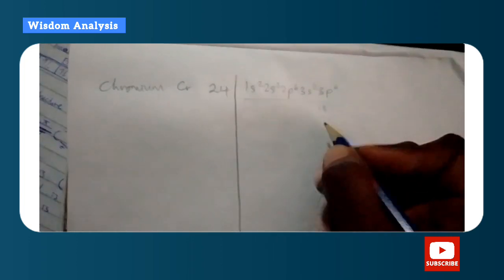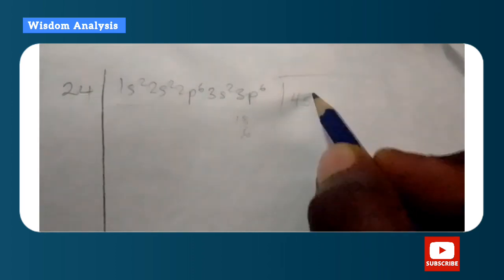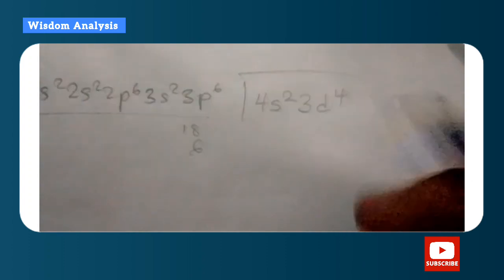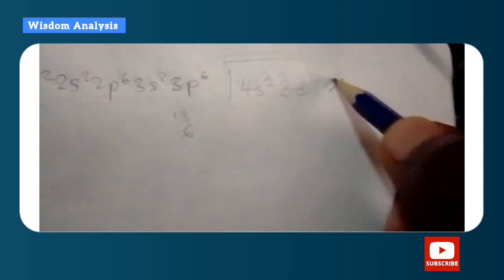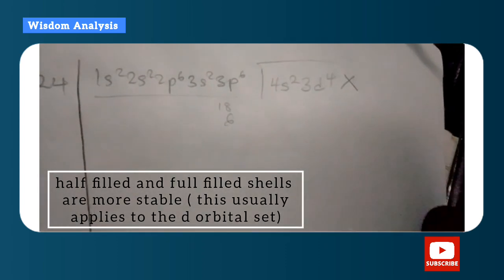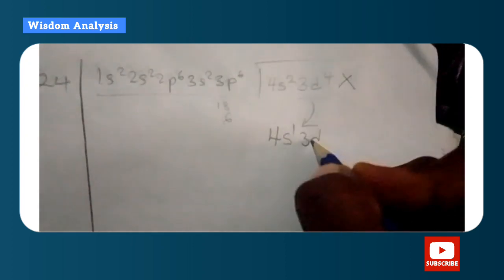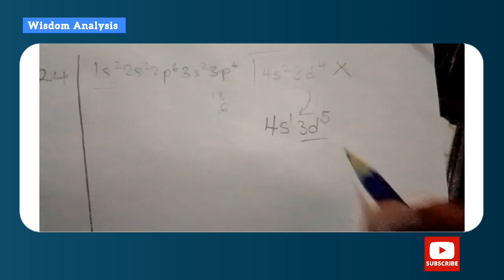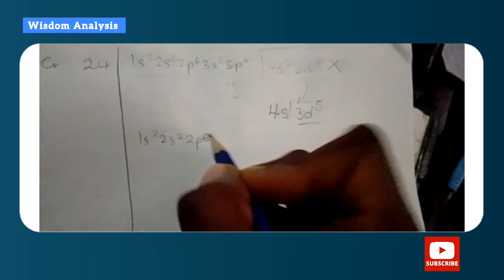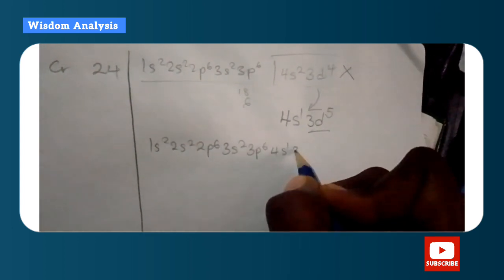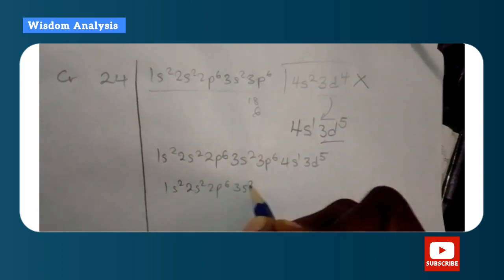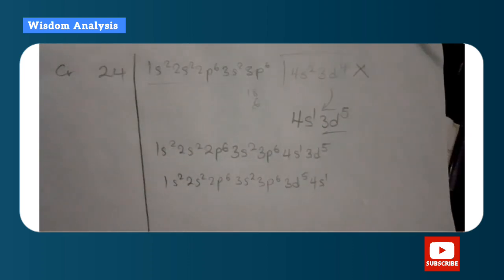For chromium (Z=24): up to 3p⁶ we have 18, needing 6 more. Writing 4s², 3d⁴ would seem correct, but half-filled or fully-filled shells have greater stability. So one electron is promoted from 4s to 3d, giving 4s¹, 3d⁵ — making the d shell half-filled (d can hold 10 electrons max). This can also be written as 3d⁵, 4s¹.